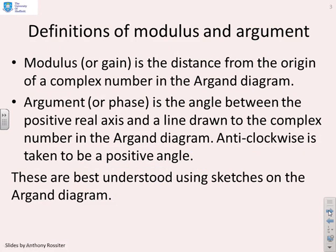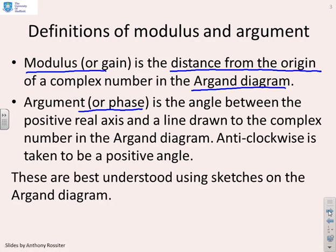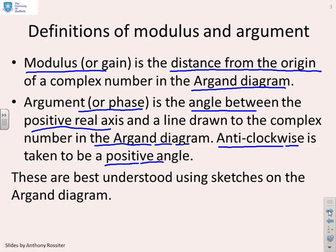What are the definitions of modulus and argument? The modulus, or gain, of a complex number is the distance from the origin in the Argand diagram. The argument, or phase, is the angle between the positive real axis and a line drawn to the complex number in the Argand diagram. Note that anti-clockwise is taken to be a positive angle — that's very important.